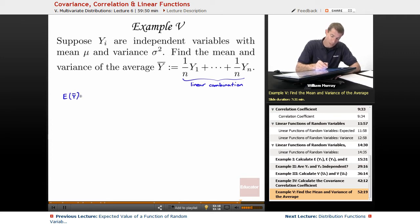The expected value of y bar is just the expected value of 1 over n, y1, up to 1 over n, yn. And I can distribute by linearity of expectation. That was the theorem that we had. So I can distribute and pull out those coefficients, 1 over n times E of y1, up to 1 over n times E of yn.